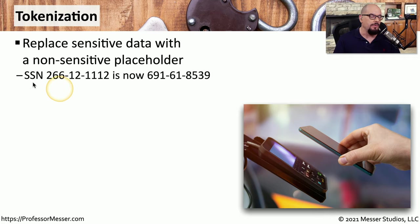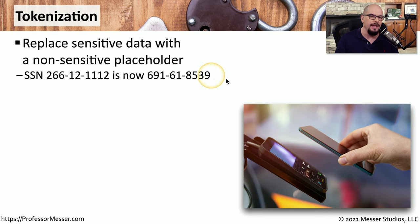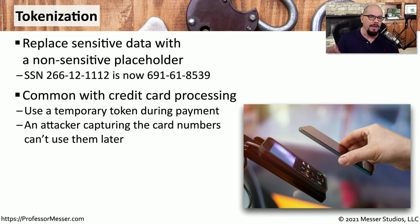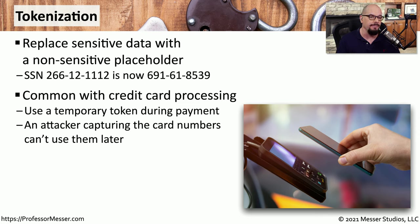For example, if you have a social security number that is 266-12-1112, we can store that data in a database and display it on the screen as 691-618-539. We're able to tie back the original social security number with this new tokenized version because we have a single database that matches those up, and that database is one that's relatively private.